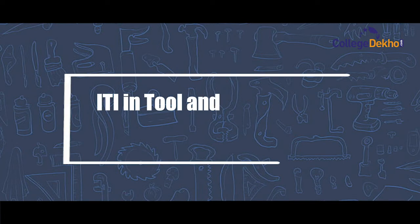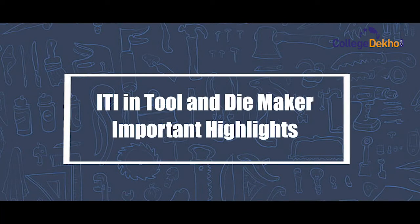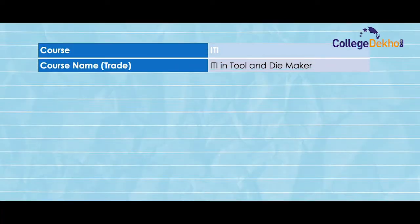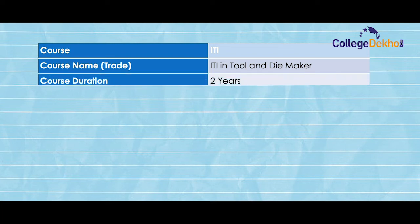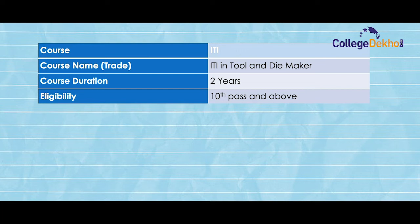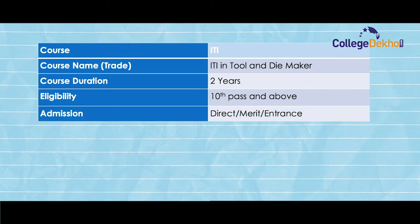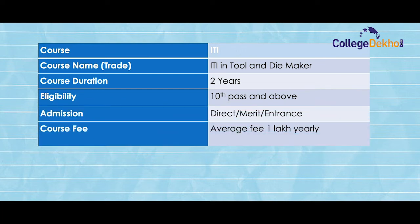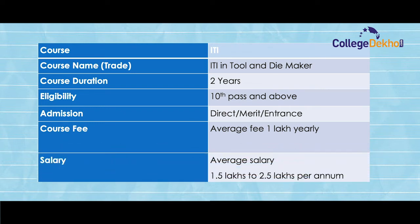ITI Tool & Die Maker important highlights: Course ITI, course name trade — ITI Tool & Die Maker, course duration 2 years, eligibility 10th pass and above, admission — direct, merit and entrance, course fee — average fee 1 lakh per year, salary — average salary will be 1.5 lakhs to 2.5 lakhs per annum.